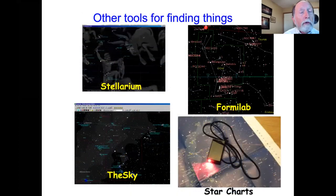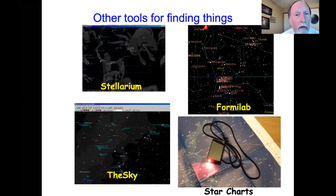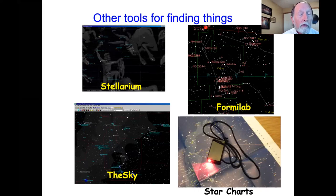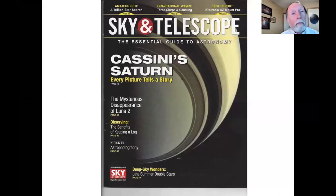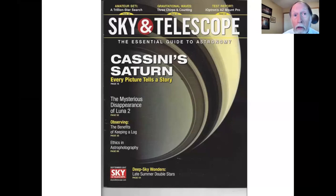Besides the guideposts of the constellations and their asterisms, there are a number of other ways that amateurs can find things, similar to what professionals now use. There are computer programs and star charts, most of which are not expensive and some of the computer programs are actually free. Some of the popular astronomy magazines have foldouts of the major items for that month, as well as discussions of techniques for locating hard-to-find targets.